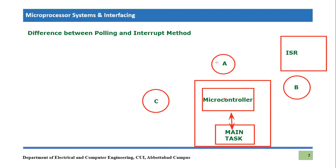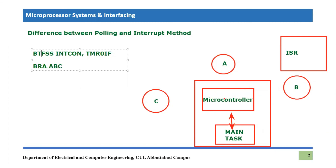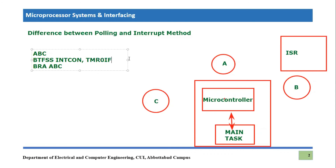If you have been following this lecture series, we have been using the BTFSS instruction — Bit Test File Skip if Set — very frequently. For example: BTFSS INTCON, TMR0IF, and then branching to a label. We were continuously monitoring the status of the TMR0IF bit, or other flags like TXIF or RCIF. That method of continuously monitoring flags is called polling. The interrupt method, which we haven't discussed yet, will be covered in coming lectures from a PIC18 assembly language programming perspective.